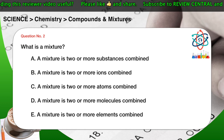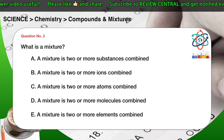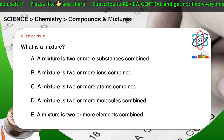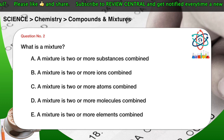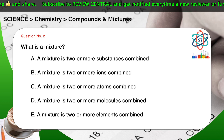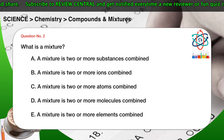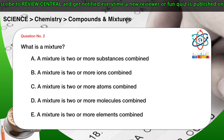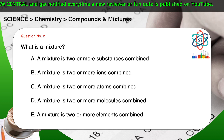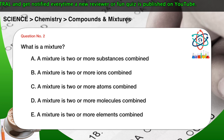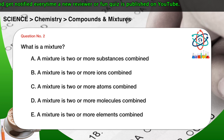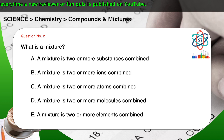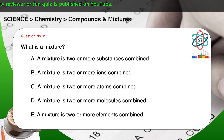Question number 2. What is a mixture? A. A mixture is two or more substances combined. B. A mixture is two or more ions combined. C. A mixture is two or more atoms combined. D. A mixture is two or more molecules combined. E. A mixture is two or more elements combined.